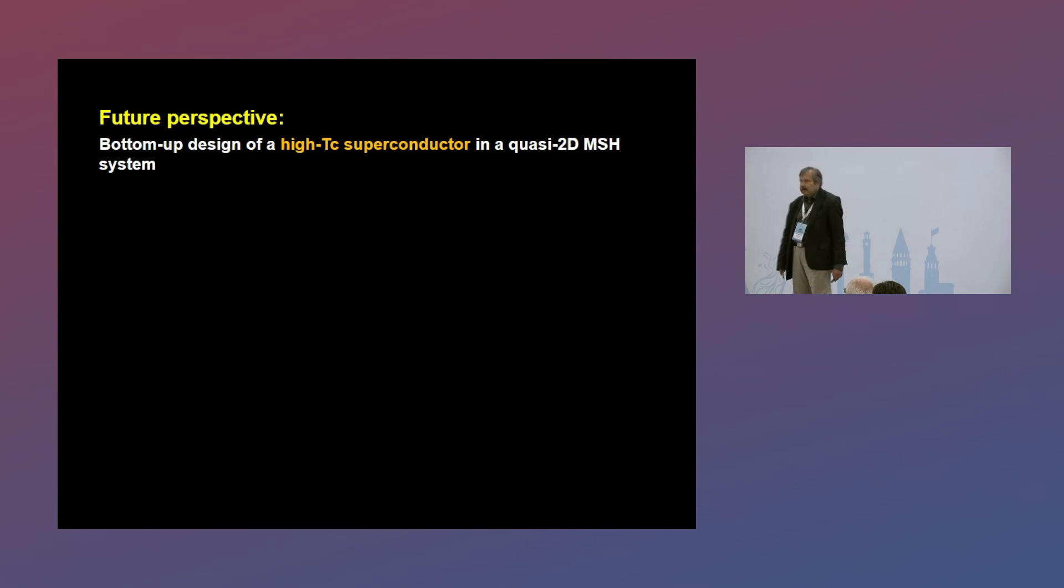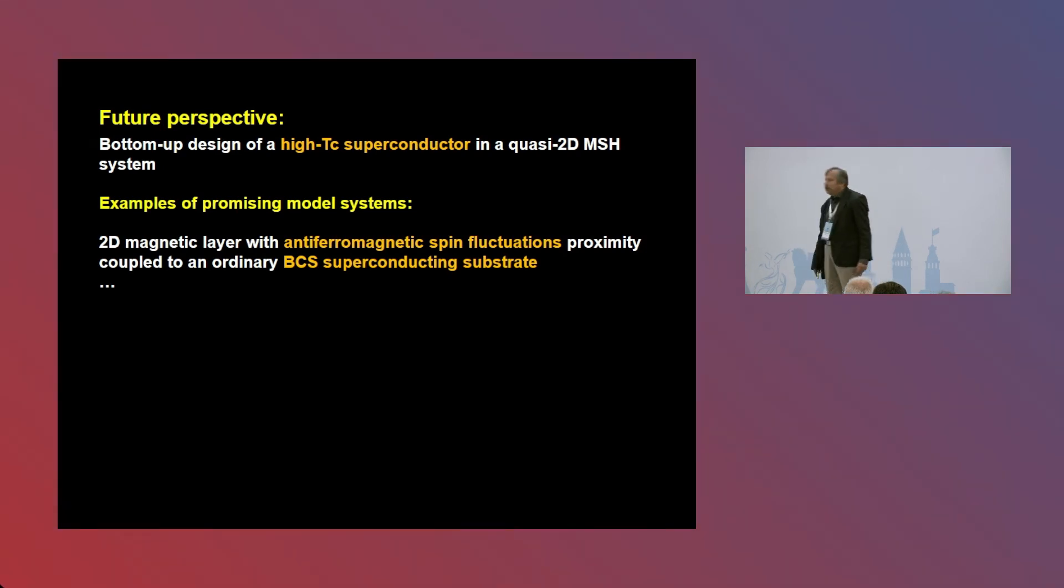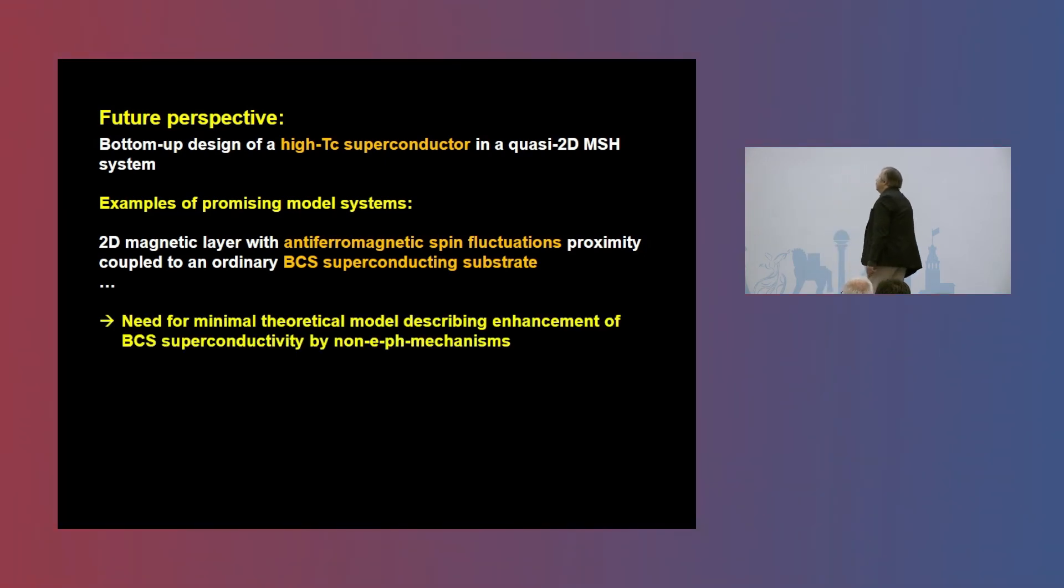Now, this is my final slide. What are the future perspectives? So we are really looking forward now to bottom-up design of something like a high-TC superconductor, maybe not yet at the beginning at room temperature, but in a quasi two-dimensional magnet superconductor hybrid systems. So the idea is not to start with very complex materials where the physics might be very complex to describe, but really to have something like a minimal experimental model system and a minimal theoretical model to catch the basic physics of such kind of high-TC superconductor. So one example of promising model systems would be, for instance, a two-dimensional magnetic layer with antiferromagnetic spin fluctuations, which we can observe experimentally, proximitized on top of a BCS superconducting substrate.